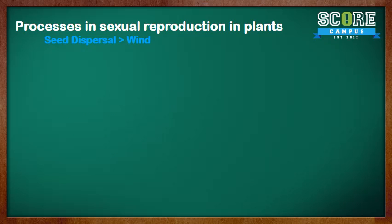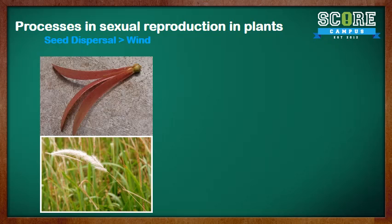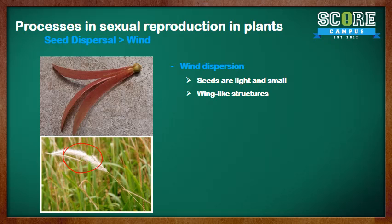Next up, wind dispersal. These are some seeds and fruits that are dispersed by wind. Seeds are usually light and small, like the lalang seeds shown here, so they can be easily carried by the wind. Some of them have wing-like structures, and some of them even have hair, as you can see, to help them fly easier and be carried by the wind.